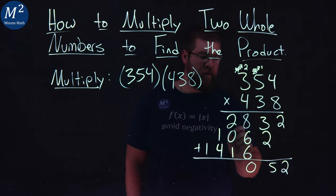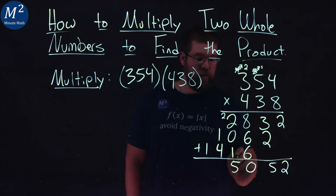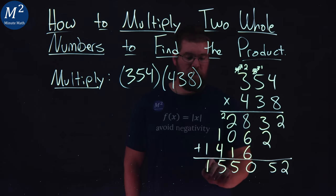We put a 0 here, carry the 2. 2 plus 2 is 4, plus 0 is 4, plus 1 is 5. 1 plus 4 is 5, and 1 by itself is 1.